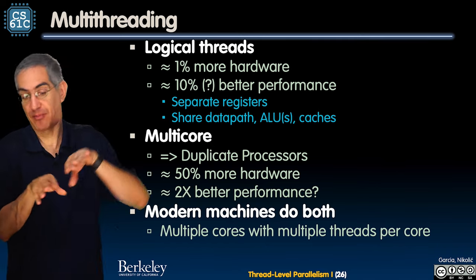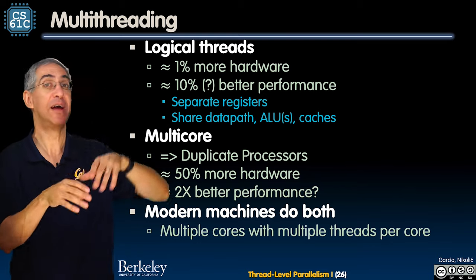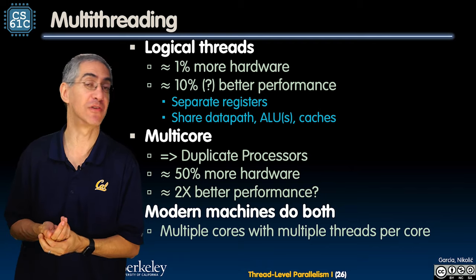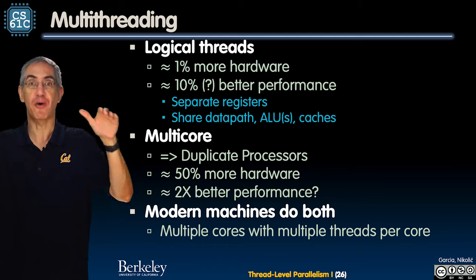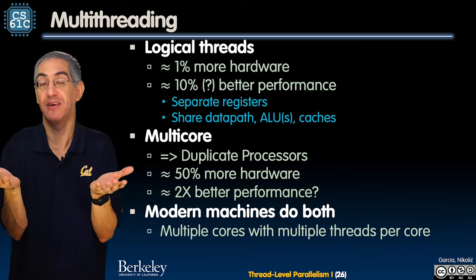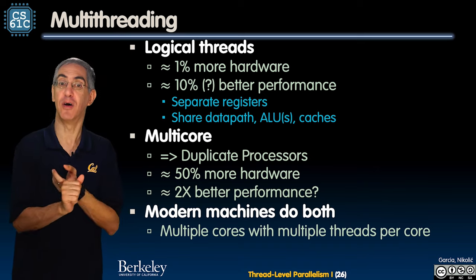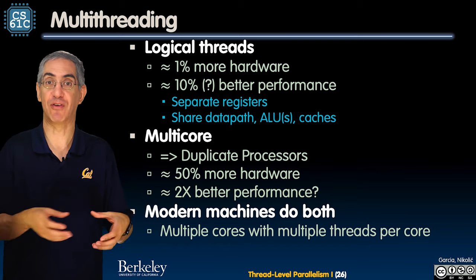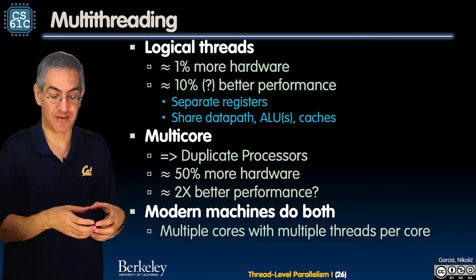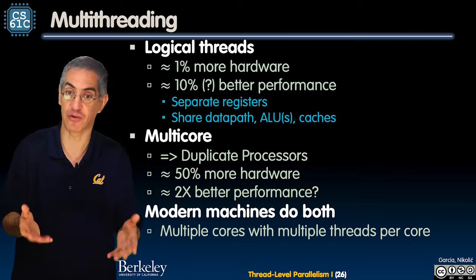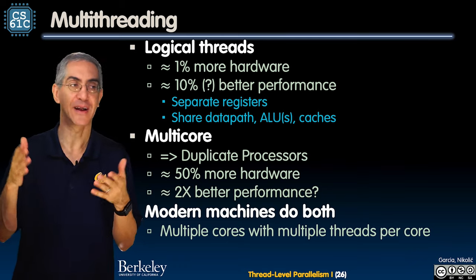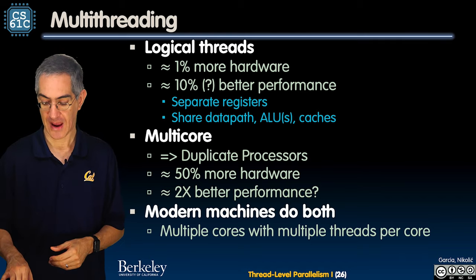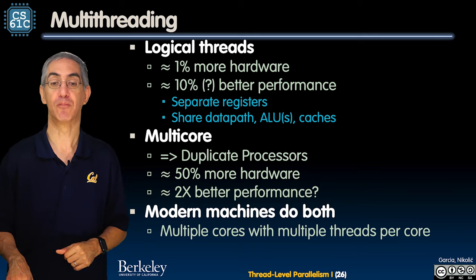Arguably 10% or more better performance, because when one resource is idle I can fit another thread in there. A lot of clever engineering has gone into making these as efficient as possible — separate registers, but sharing the data path, the ALUs, and the caches. From the software point of view, I just see two different logical CPUs. Multi-core means duplicating processors — roughly 50% more transistors — and that can give you up to double the performance. But hyper-threading gives about 10% better performance, while multi-core gives arguably up to 2× better performance. Modern Intel architectures do both: multiple cores with multiple threads per core.